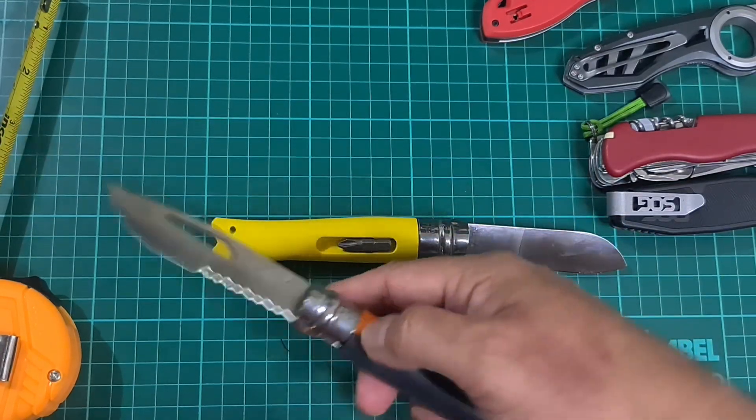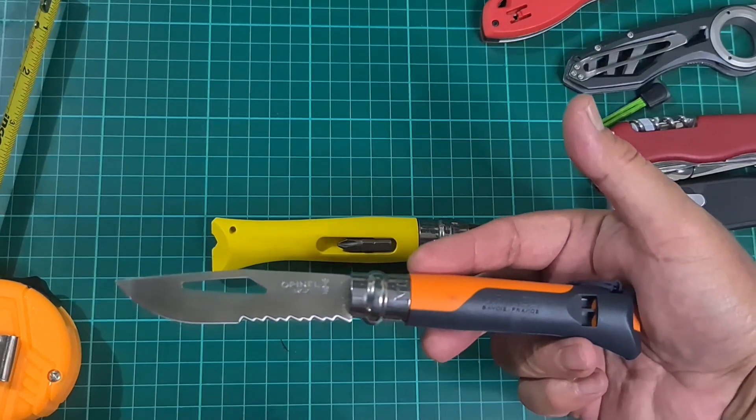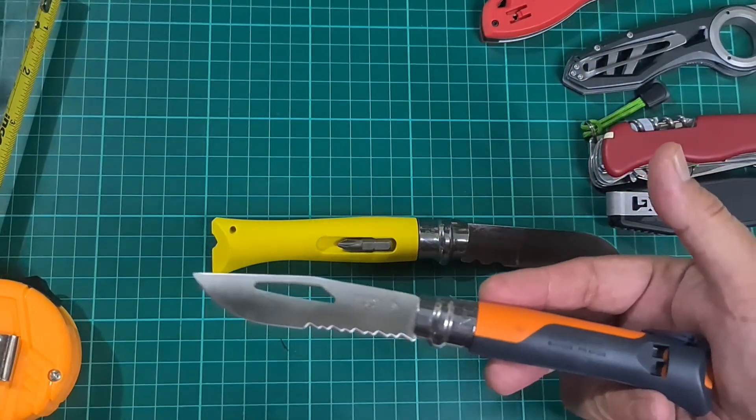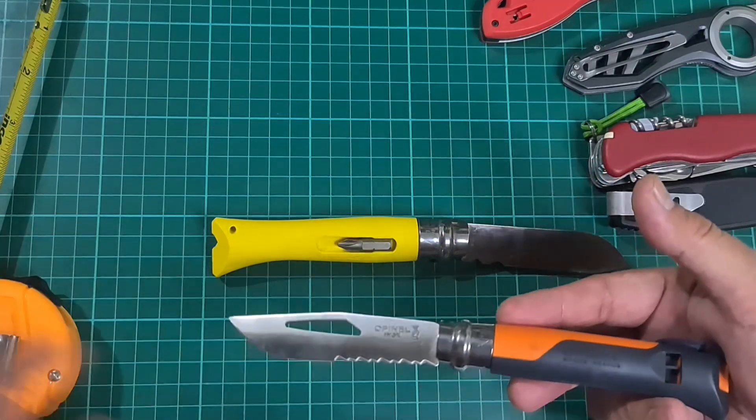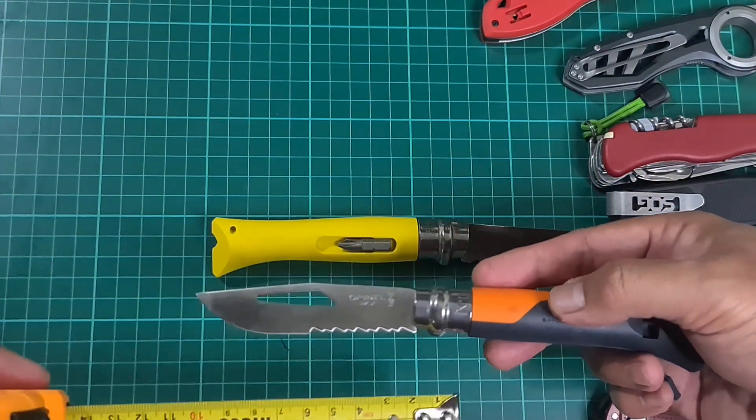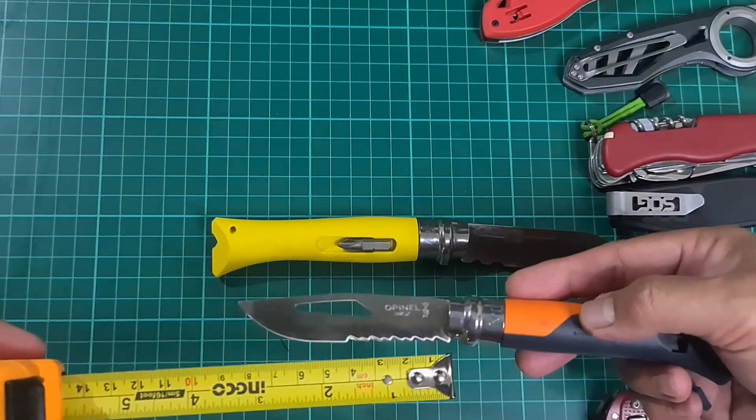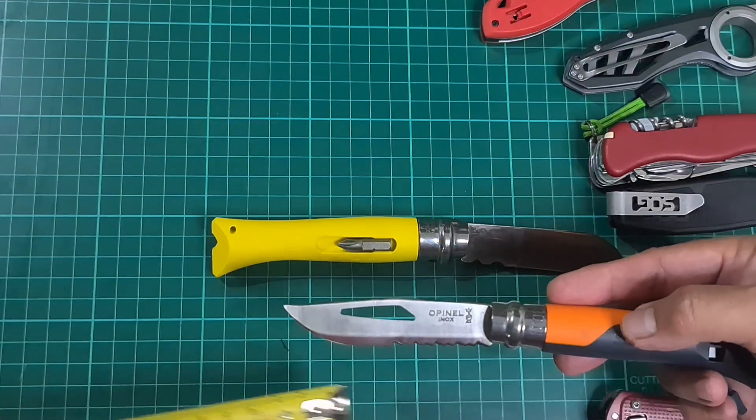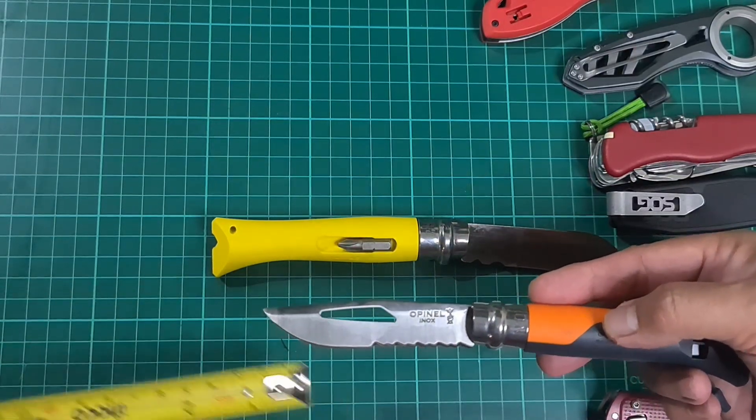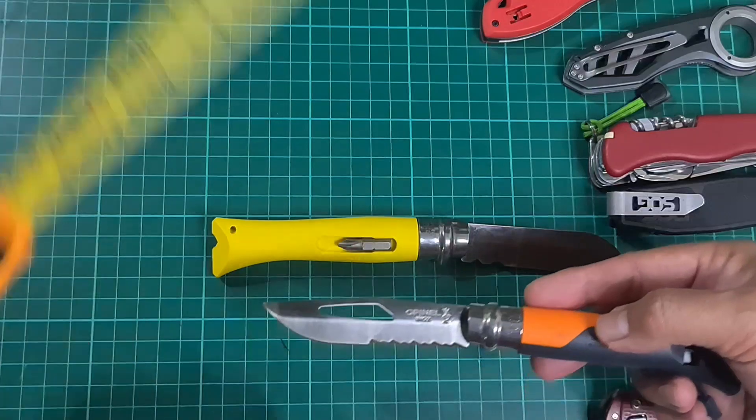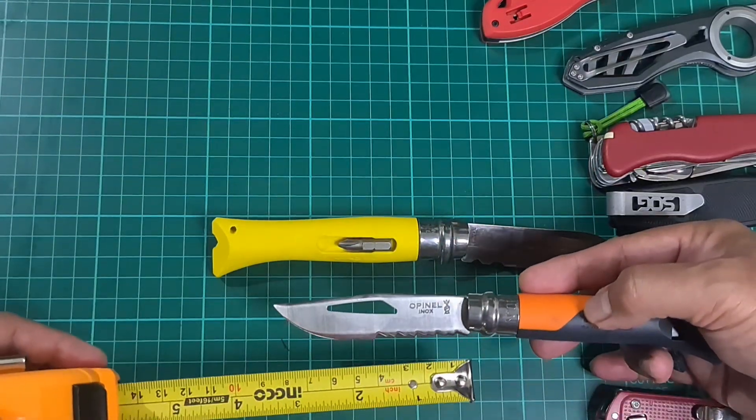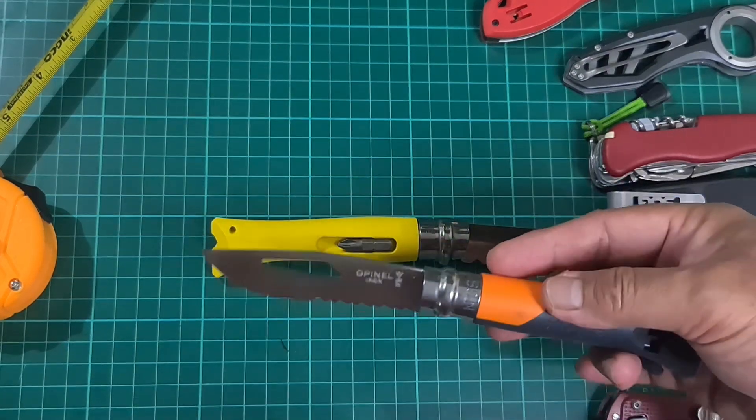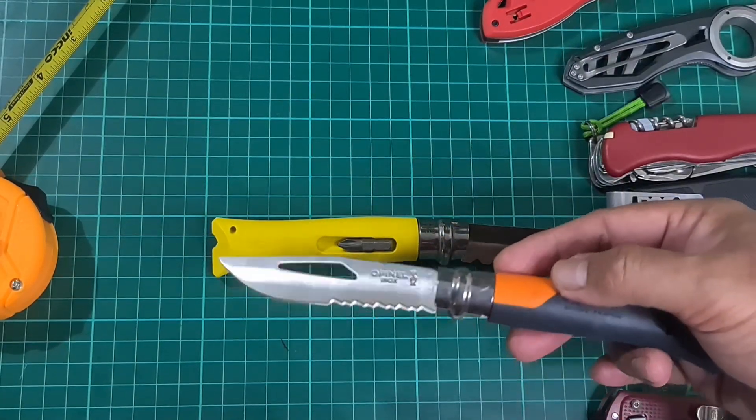Blade length is 8.5 centimeters. Half of it is serrated and half of it, from the belly to the tip, is plain edge. So the blade length is eight centimeters - four centimeters serrated and four centimeters plain edge.